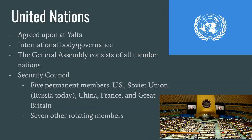First, we're going to start off with the United Nations. The idea for the international body was agreed upon at the Yalta Conference during World War II. Unlike the previous League of Nations, the United States will stick with this one and even locate the United Nations within its borders in New York. The General Assembly consists of all member nations, and the most important subgroup is the Security Council. In the Security Council are five permanent members, which were on the victorious side of World War II: the United States, Soviet Union (now Russia), China, France, and Great Britain. There are seven other rotating positions on the Security Council as well.